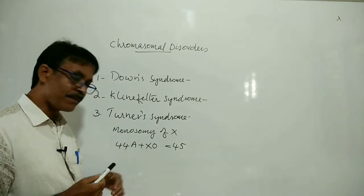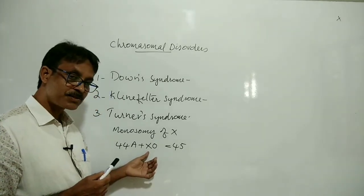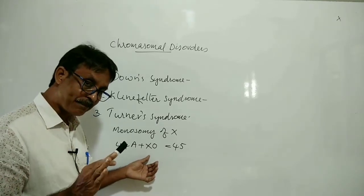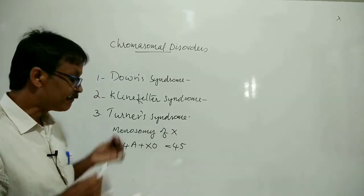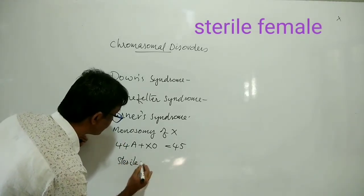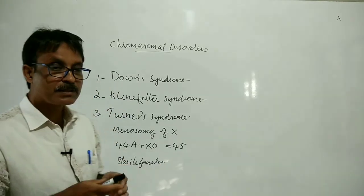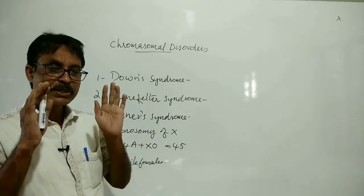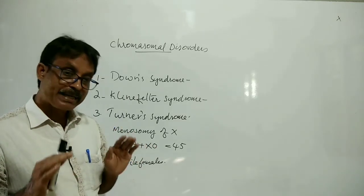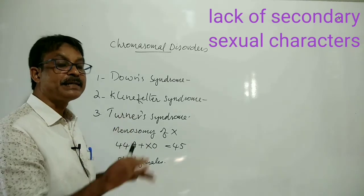Turner syndrome individuals are females, but one X chromosome is absent in them, so they are sterile females. They have rudimentary ovaries, so their ovaries cannot produce ova. Many secondary sexual characters are also absent in them.